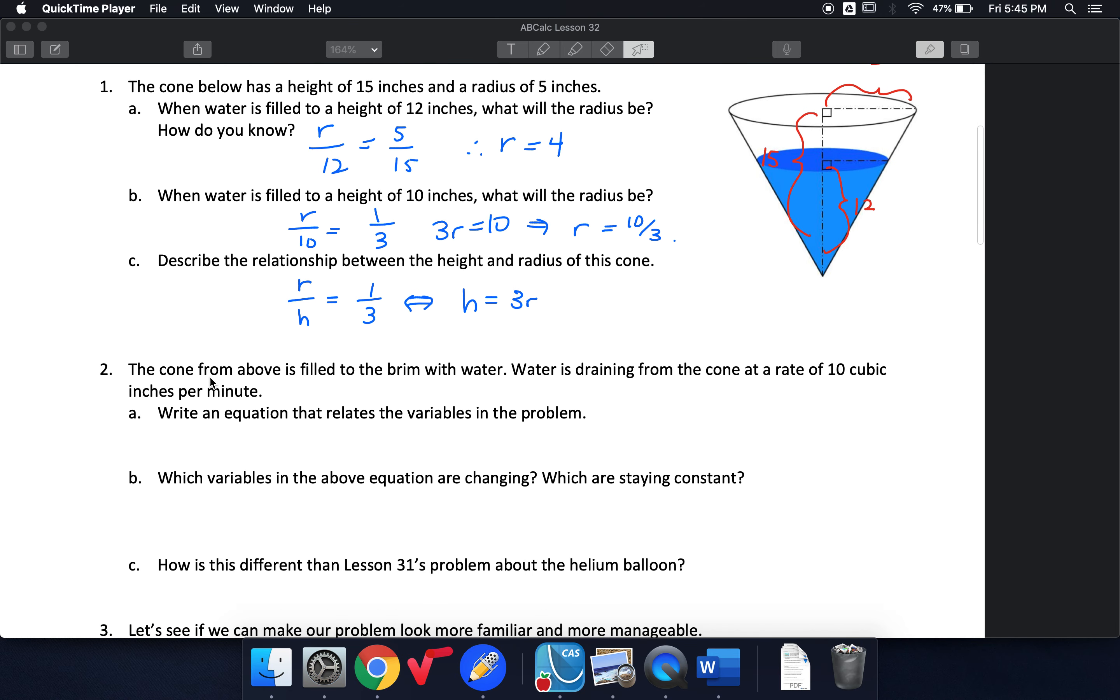So we're going to fill the cone to the top with water and then we're going to drain water from the cone at a rate of 10 cubic inches per minute. If I'm going to connect this back into derivatives, then rate of volume changing per minute, that's going to be dv/dt. The draining is going to be represented by a negative, so that's going to be negative 10, and my units are cubic inches per minute.